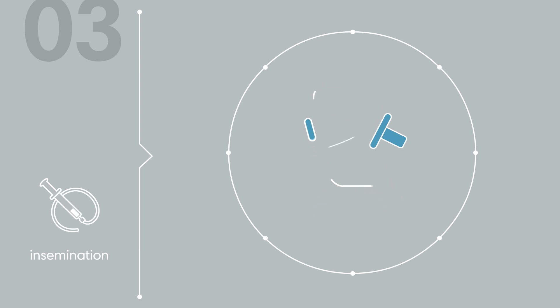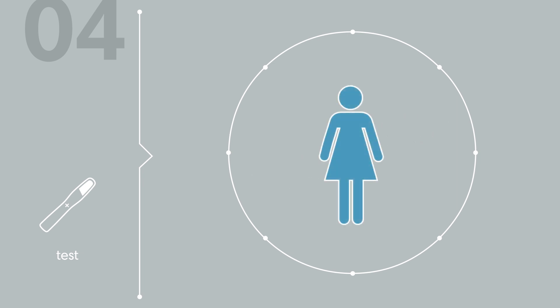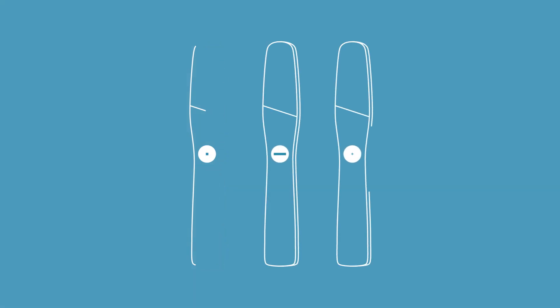Two weeks after the procedure, the woman takes an at-home pregnancy test. The pregnancy rate with IUI depends on many factors, which we'll discuss more before you start treatment. For some women and couples, the IUI procedure may need to be repeated multiple times.